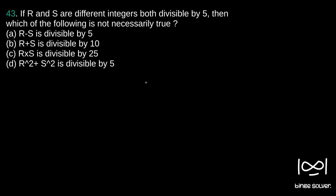Let us assume R is of the form P into 5, where P can be any integer, and S is of the form Q into 5. Since they are divisible by 5 only, we write it like this. P and Q are some integers — we don't know their specific values.